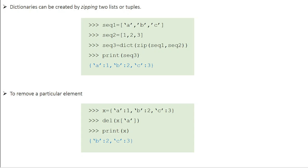If you want to remove a particular element from a dictionary, you use the function 'del'. You remove an element using its corresponding key. When you say del x['a'], the element corresponding to key 'a' is removed — the entire key-value pair is deleted. When you print x now, it will show only the remaining elements: {'b': 2, 'c': 3}.